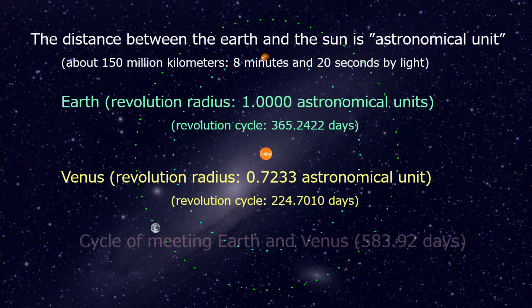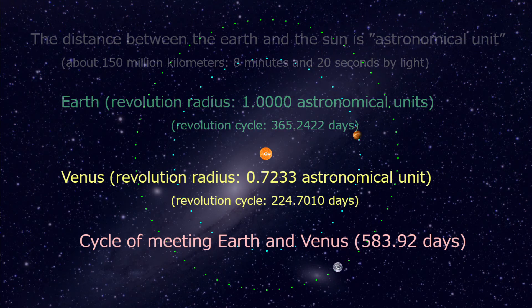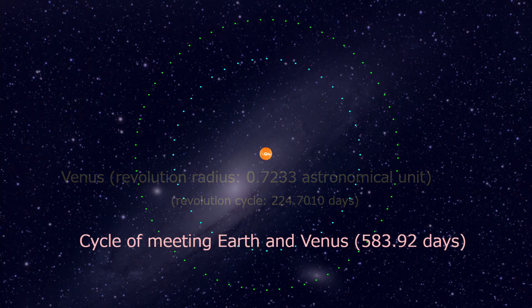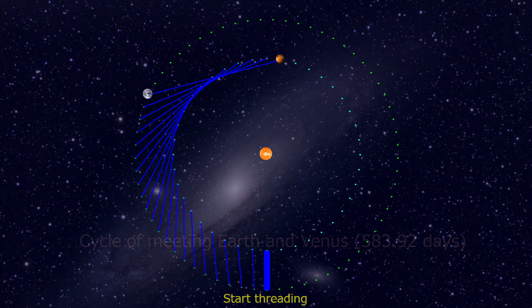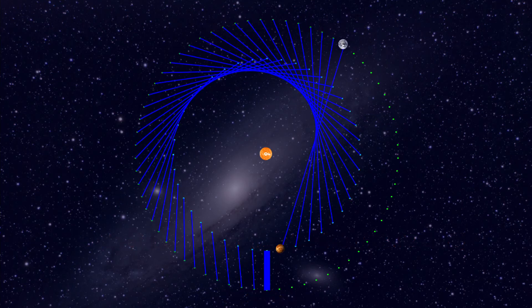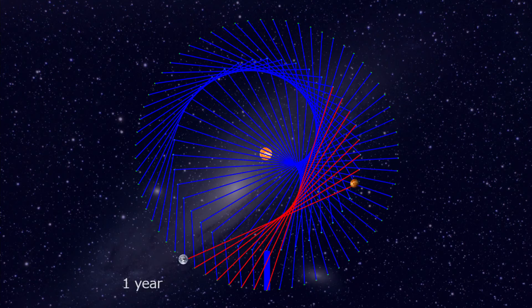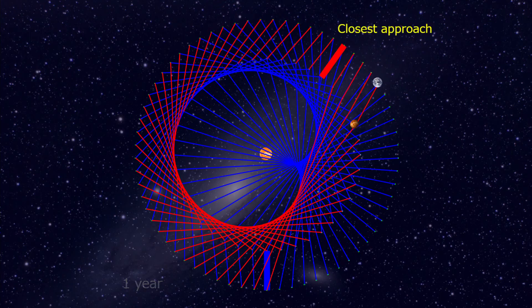The meeting cycle with Venus — let's start threading. At 1 year, we mark the closest approach between Venus and Earth.